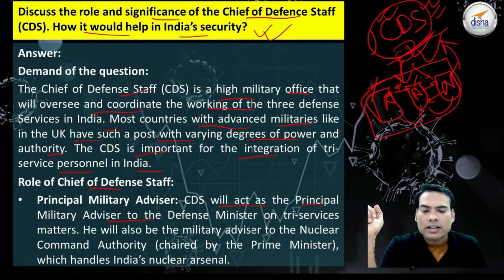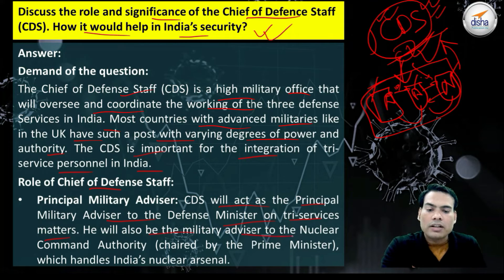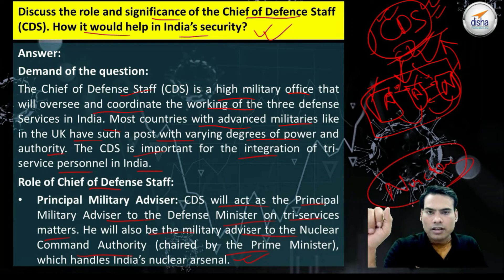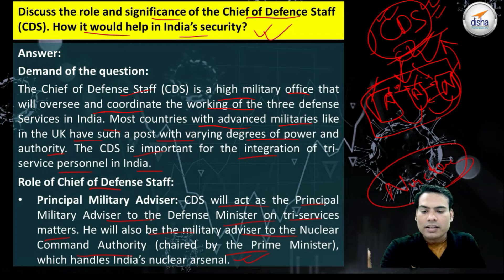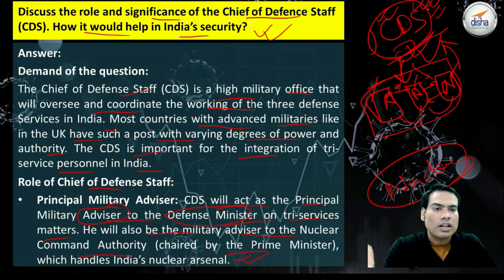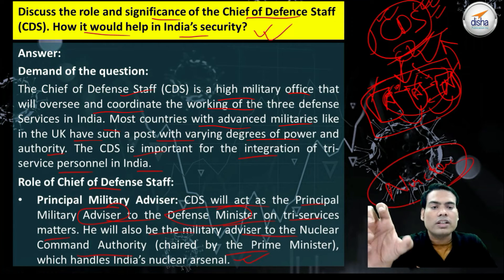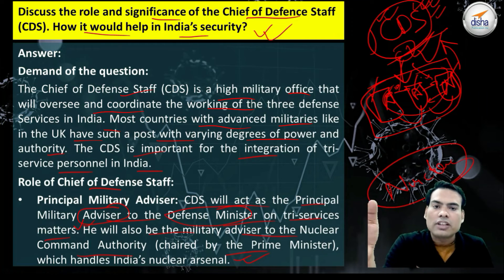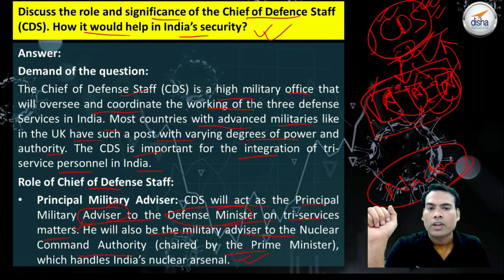The CDS will act as the principal military advisor to the Defence Minister on tri-services matters. He will also be the military advisor to the Nuclear Command Authority chaired by the Prime Minister, which handles India's nuclear arsenal. The CDS thus acts as military advisor, conveying the concerns of the Navy, Army, and Air Force to the Defence Minister on tri-services matters.